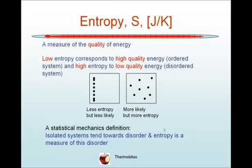So for example, we don't normally see cups of tea rise up off the floor and settle back into a hole again on the coffee table. Instead we see them get knocked off the coffee table and break into many pieces. So a statistical mechanical definition of entropy would be that isolated systems tend towards disorder, and entropy is a measure of this disorder. And the entropy increases over time.